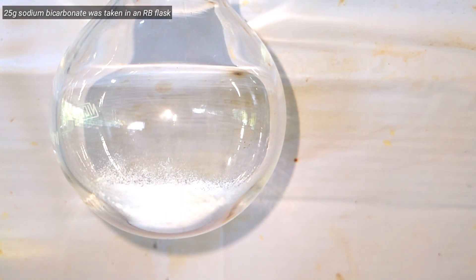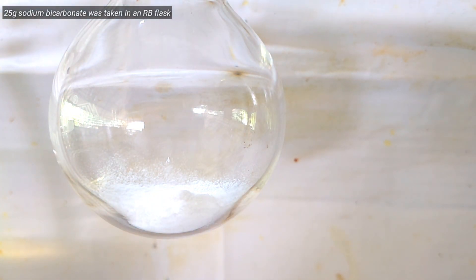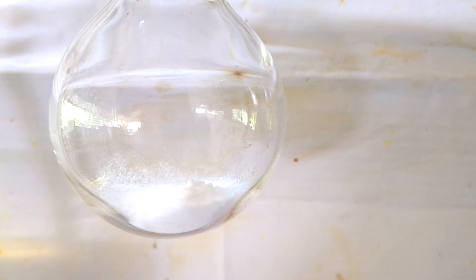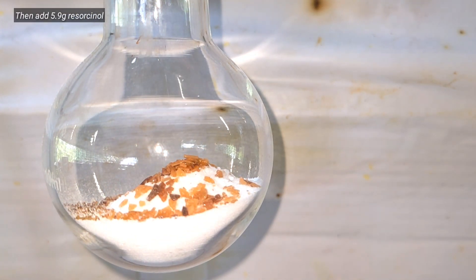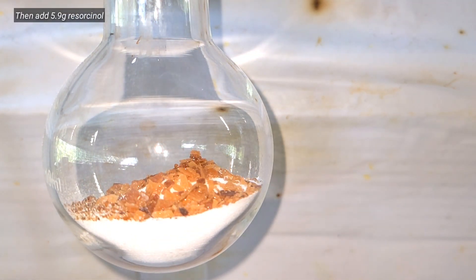Start by fixing a small 100 milliliter round bottom flask on its stand and start adding the sodium bicarbonate, or sodium hydrogen carbonate otherwise called baking soda, into it. On top of that was added 5.9 grams of resorcinol.